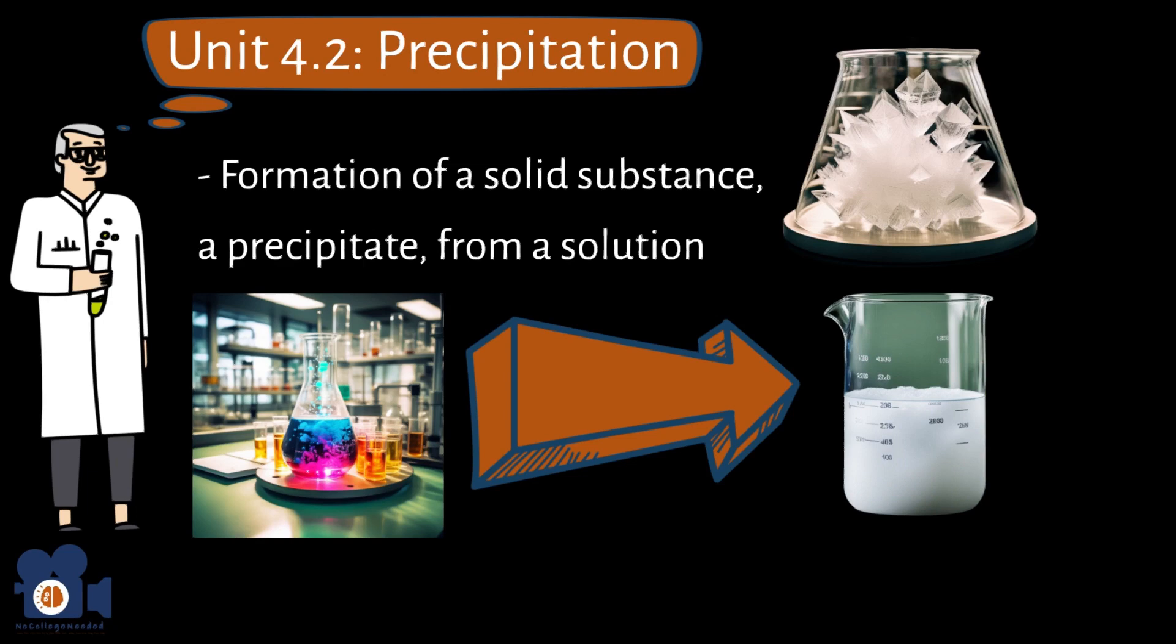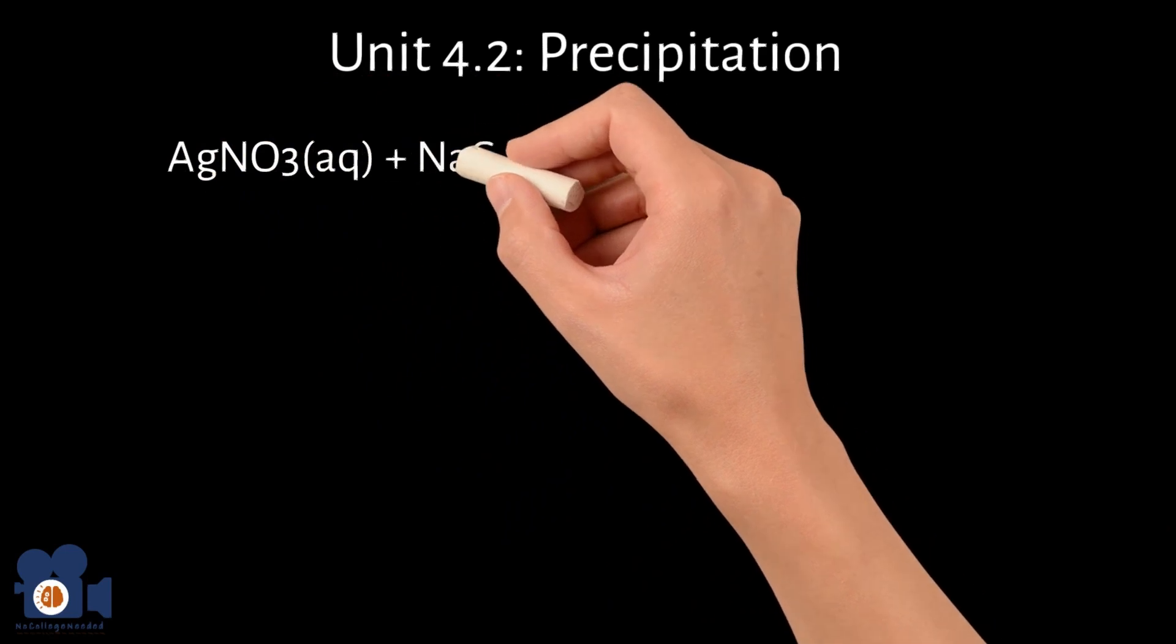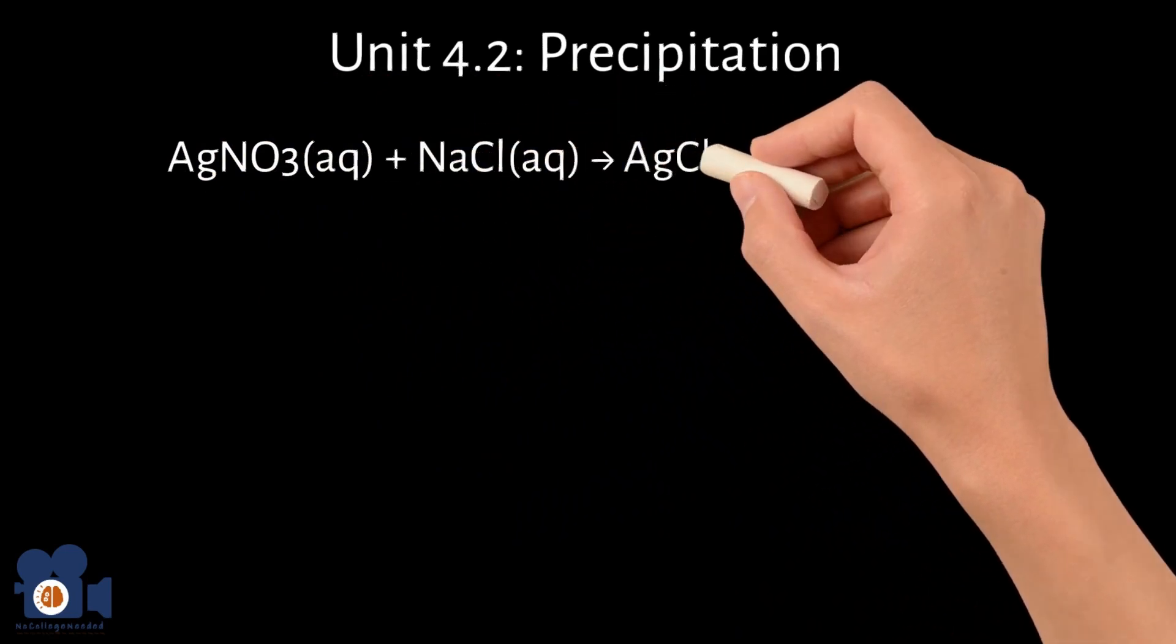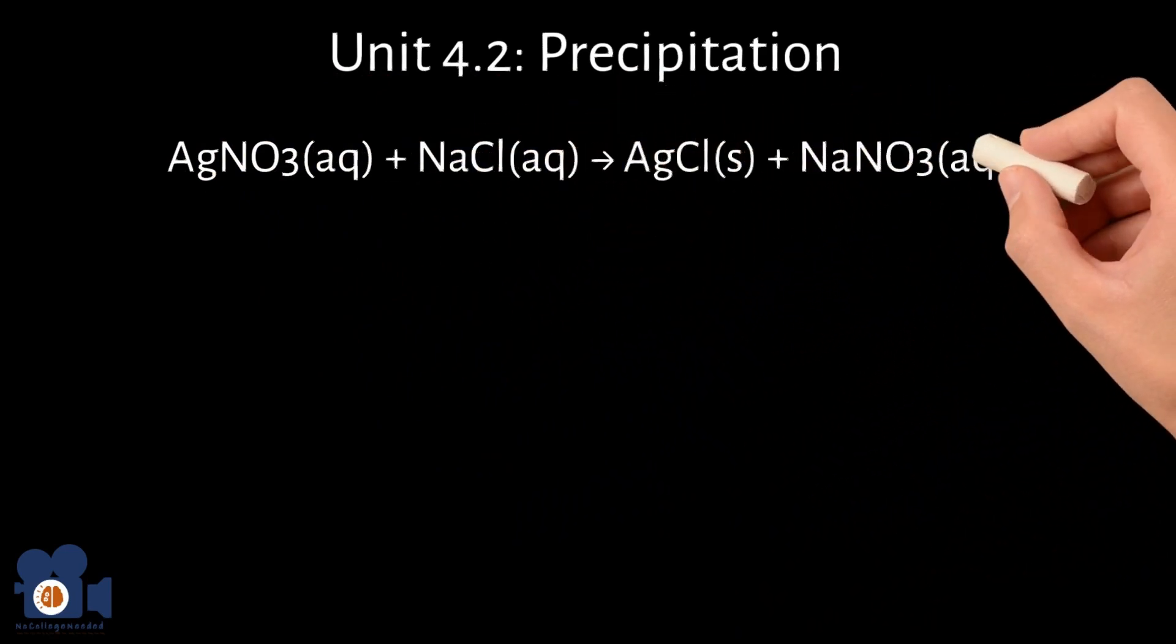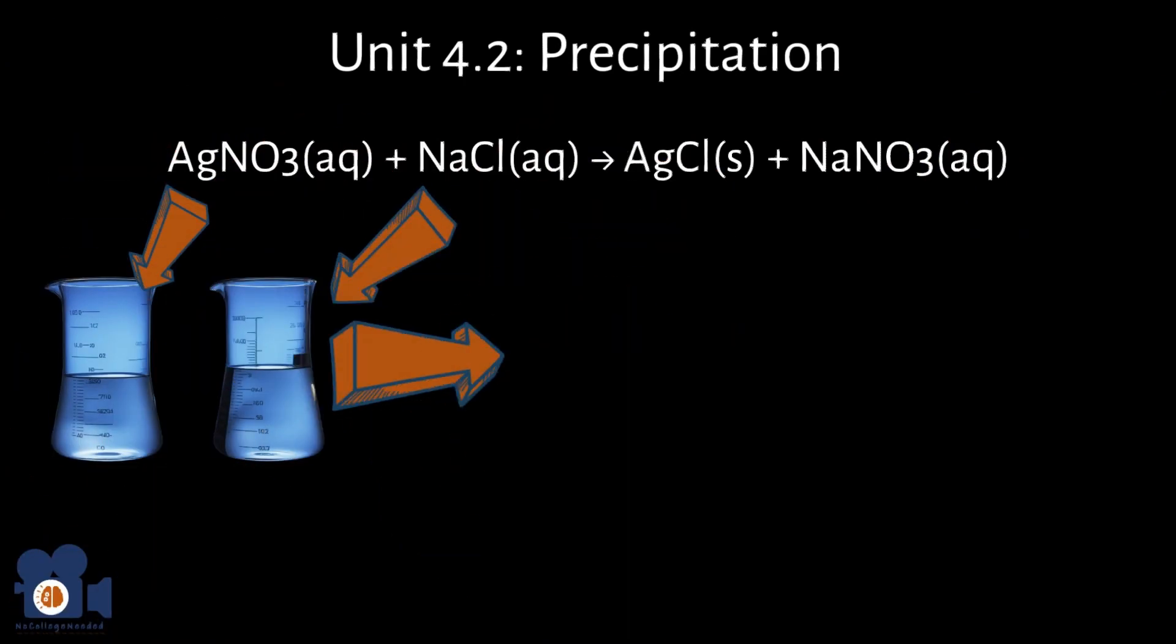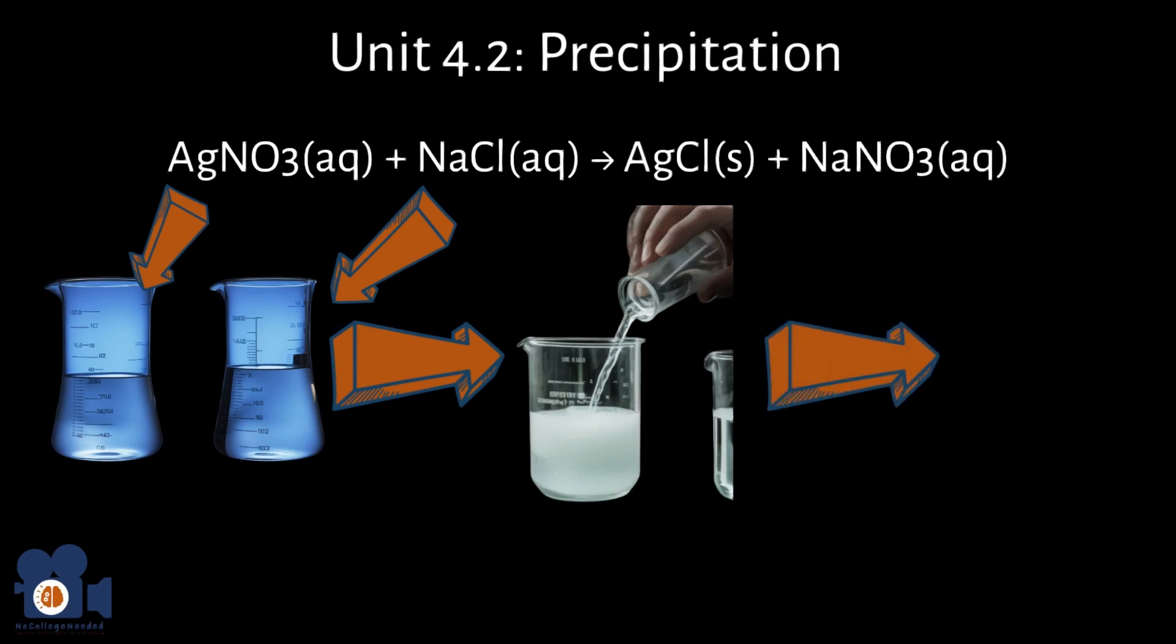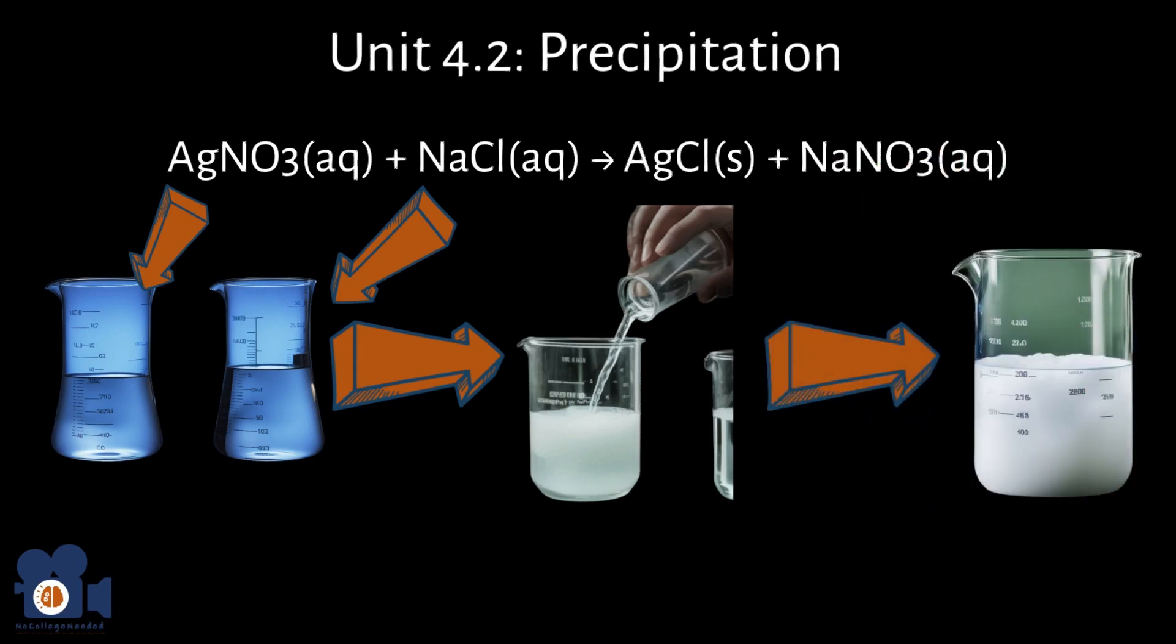A common example of a precipitation reaction is the reaction between AgNO3 plus NaCl going to AgCl plus NaNO3. You pour the silver nitrate, AgNO3, into the sodium chloride, NaCl, or vice versa, which results in the formation of silver chloride, AgCl, a cloudy white compound that precipitates out of the solution.